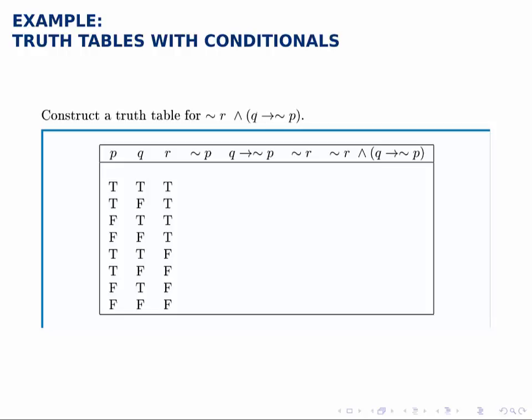Then we need a column for q implies not p, what's in parentheses. And then our final column will combine the not r column with the implication column using the and operator. So all we have to do is go through and do one operation at a time for each of these columns.